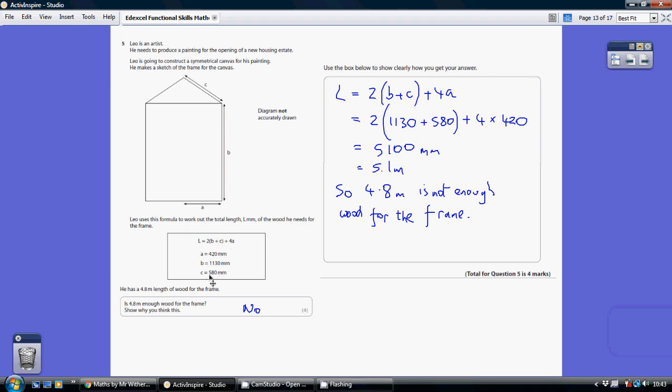to that what C is, which is 580, and then on to that we add four lots of A which is 420. Now if you just put this straight into your calculator you will get the right answer which is 5100. But if you're following BIDMAS, the order which you do things, you do brackets first so we've got